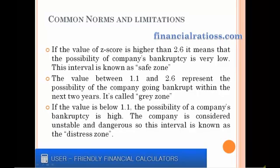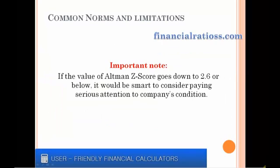If the value is below 1.1, it means that the possibility of a company's bankruptcy is high, so the company is considered unstable and dangerous. The interval is known as the distress zone. If the value of Altman Z-Score goes down to 2.6 or below, it would be smart to consider paying serious attention to the company's condition.